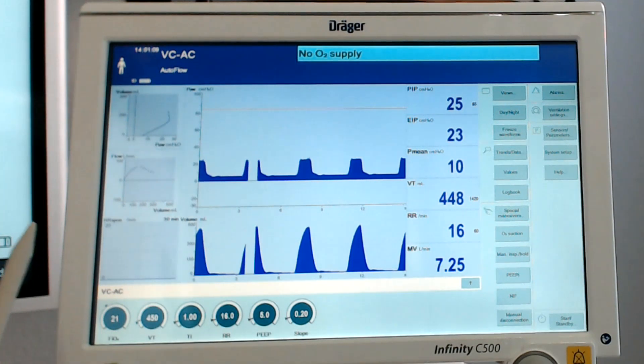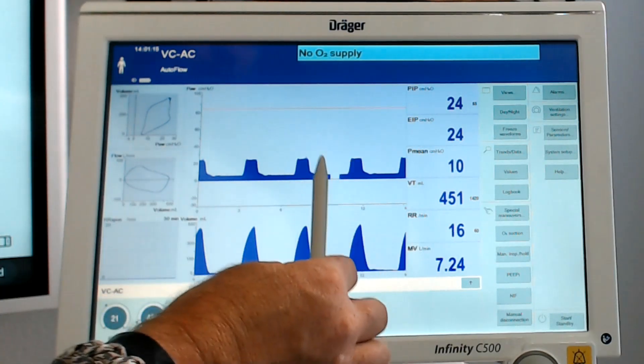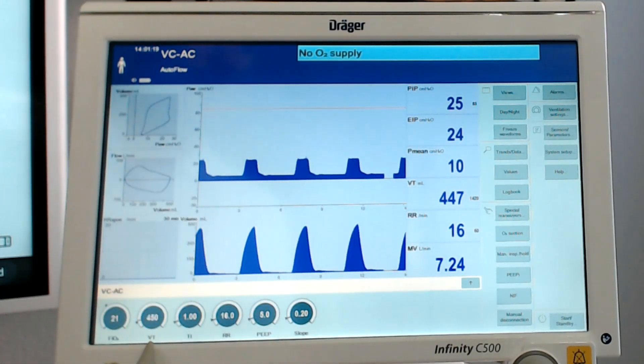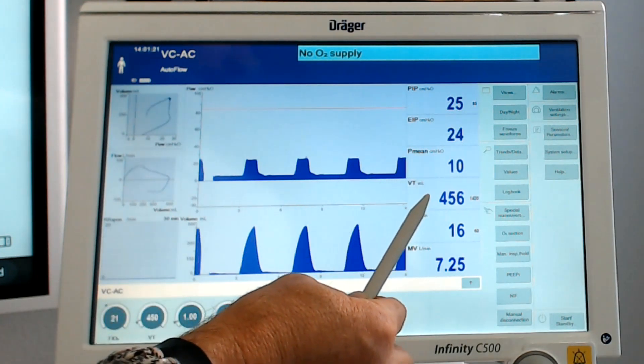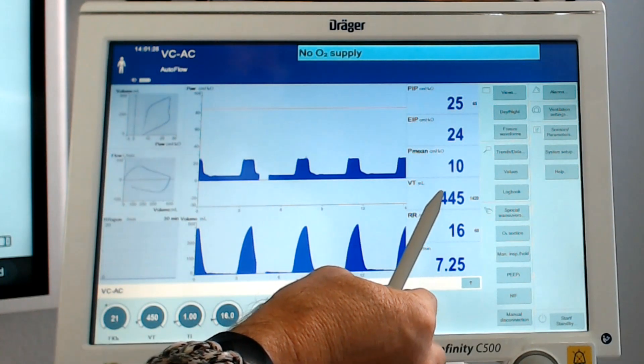It's not, because you're actually in a pressure regulated volume control type mode. So you're going to get pressure control breaths that are automatically going to target this tidal volume. If you look at where we are right now, our exhaled tidal volumes are coming in at 456, 445.